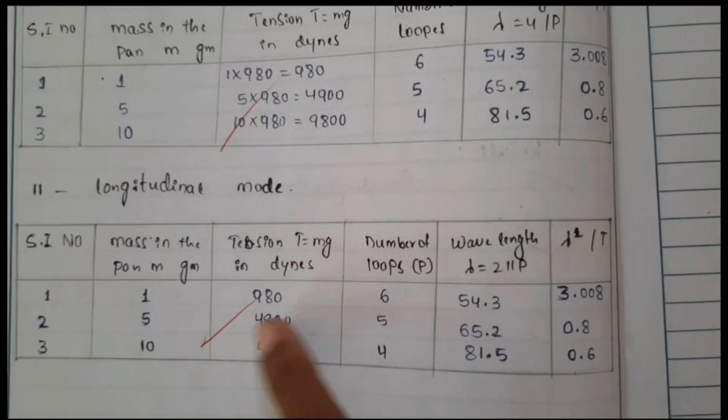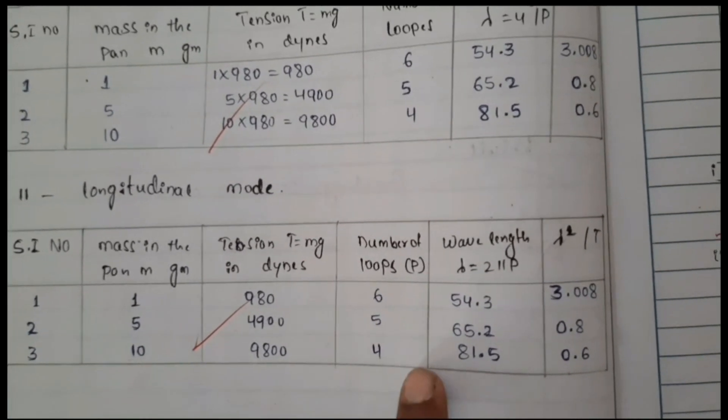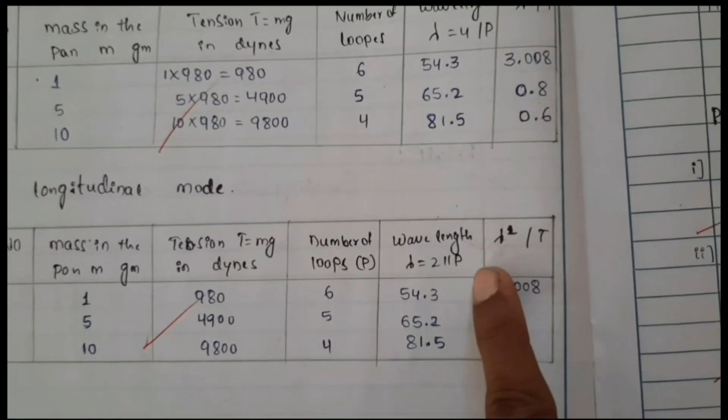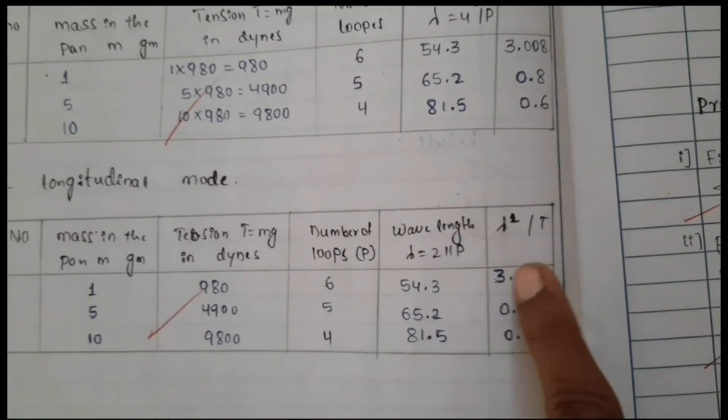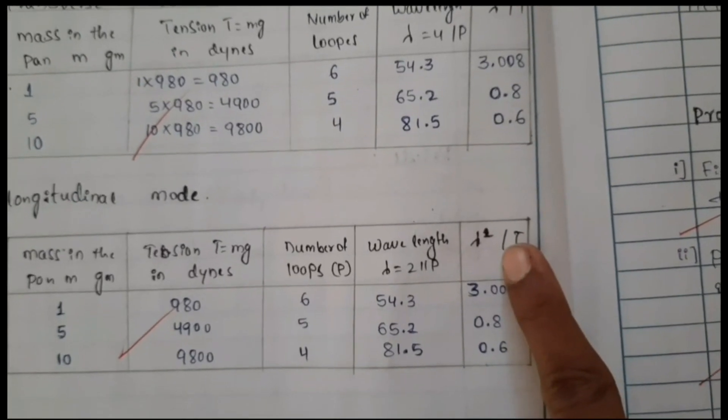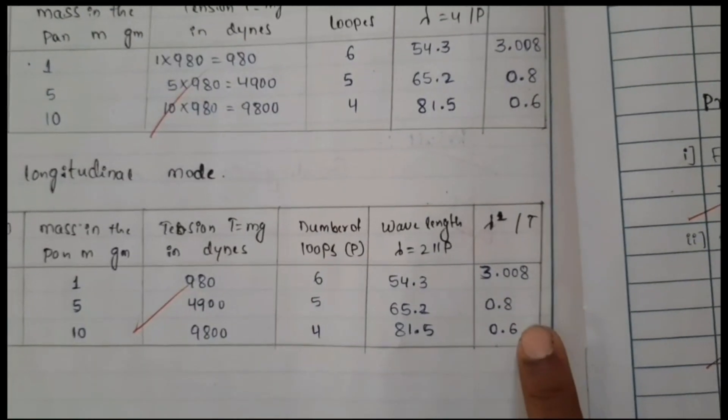The number of loops produced: for 1 gram is 6, for 5 grams is 5, and for 10 grams is 4 loops. Wavelength you can calculate. Once you calculate wavelength, square of that divided by tension in the string you have to calculate.